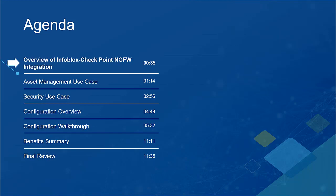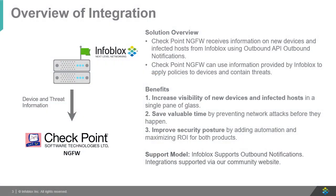Now let's see an overview of the Infoblox integration with Checkpoint's Next Generation Firewall. With Infoblox's outbound API and Checkpoint's Next Generation Firewall, we are now able to respond faster to network changes with the help of Infoblox's ecosystem license. Infoblox and Checkpoint's Next Generation Firewall come together to enable administrators to efficiently manage assets and automate DNS security. This empowers administrators with the ability to stop attacks without direct intervention and, therefore, increase the ROI of both products.